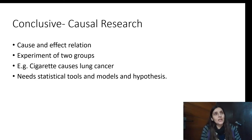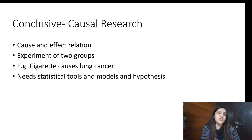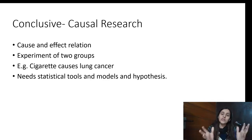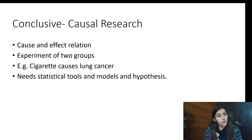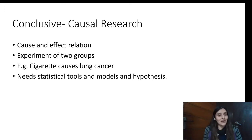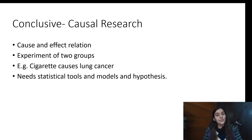Whenever I list the research objective of a causal research, if my research design is going to be causal, it has to be planned beforehand. If I know I am going to study a cause-effect relationship between two variables, my research objective will also say so. For example, in chapter one when we set up a research objective, I will say that I am studying the impact of cigarettes on lung cancer.